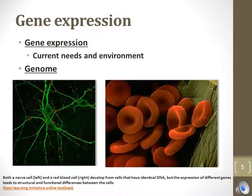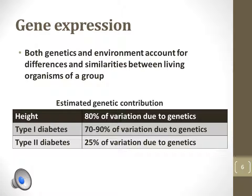Variation in gene expression allows cells with identical genetic information to function differently. The neurons and hematopoietic cells that create red blood cells in the human body contain the same genetic material but express different genes in different ways. The particular gene for a trait only accounts for a fraction of the expressed traits of an organism, and different traits are affected to a different extent.